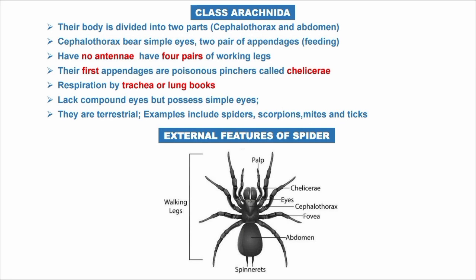As you can see here in the diagram, there are the walking legs, there is the chelicerae, there is the eye, there is the cephalothorax, there is the body, and the abdomen, and so on.